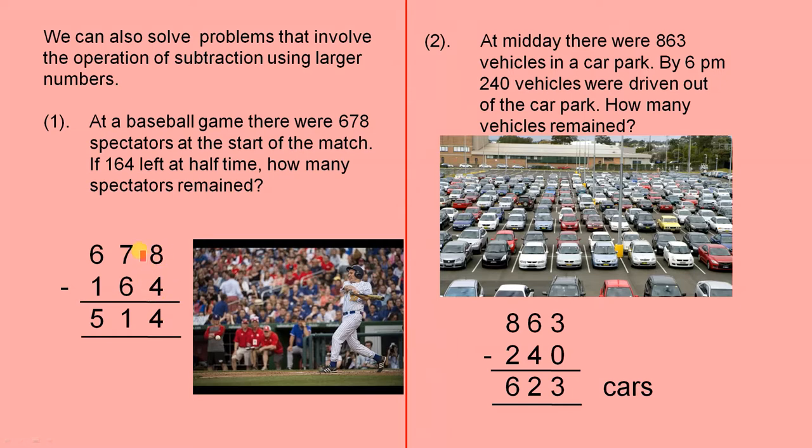So 678 minus 164. 8 take away 4 is 4, 7 take away 6 is 1, and 6 take away 1 is 5, so we had 514 left or remained. So 514 remained at the match.